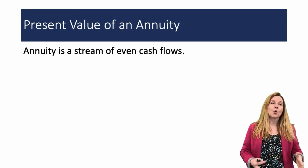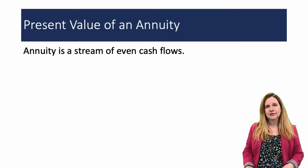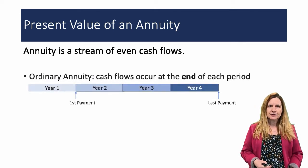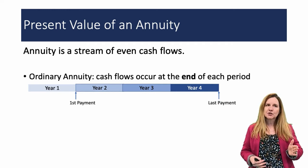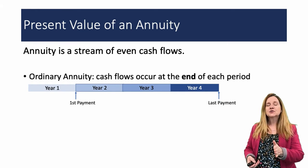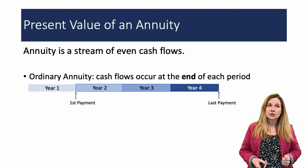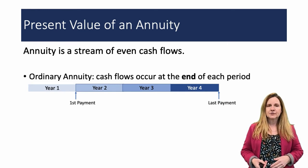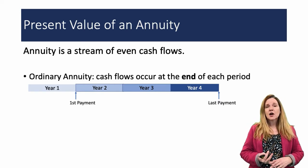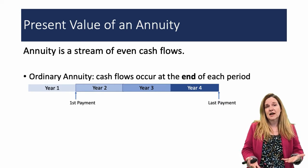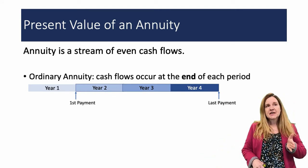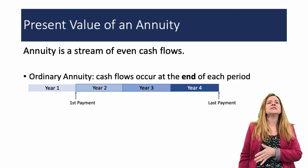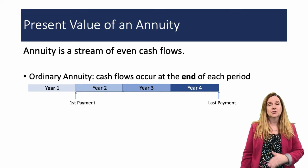We have two types of annuities: ordinary annuity and annuity due. An ordinary annuity is when cash flows occur at the end of each period. For example, if you signed a note at the beginning of year one, at the beginning of year two you make the first payment on the loan — that would be an ordinary annuity. If you have a car loan or a mortgage, that's typically how it works. You sign it and don't have to make the payment until the next period. The ordinary annuity ends at the end of the agreement.